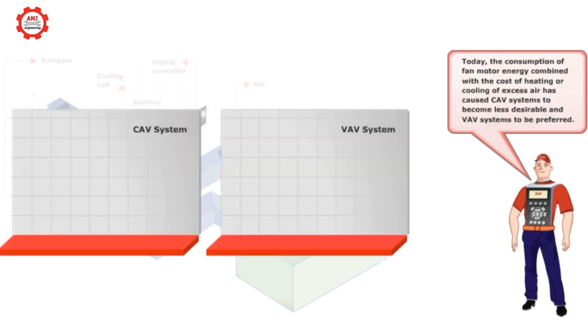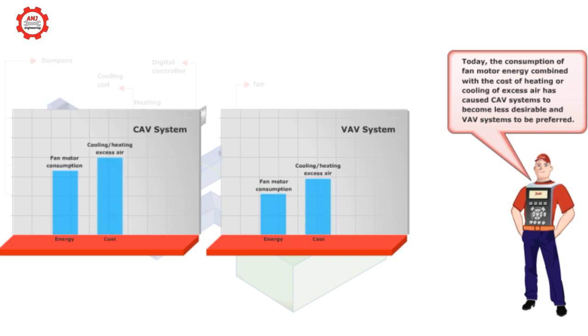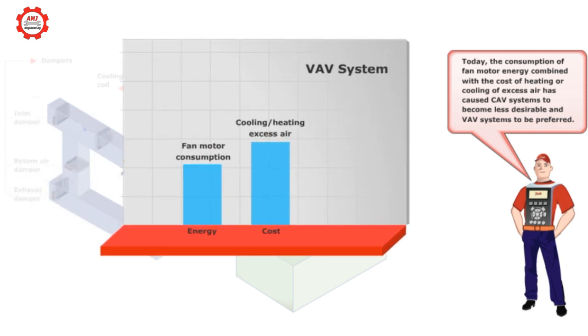Today, the consumption of fan motor energy combined with the cost of heating or cooling of excess air has caused constant air volume systems to become less desirable, and variable air volume systems to be preferred.